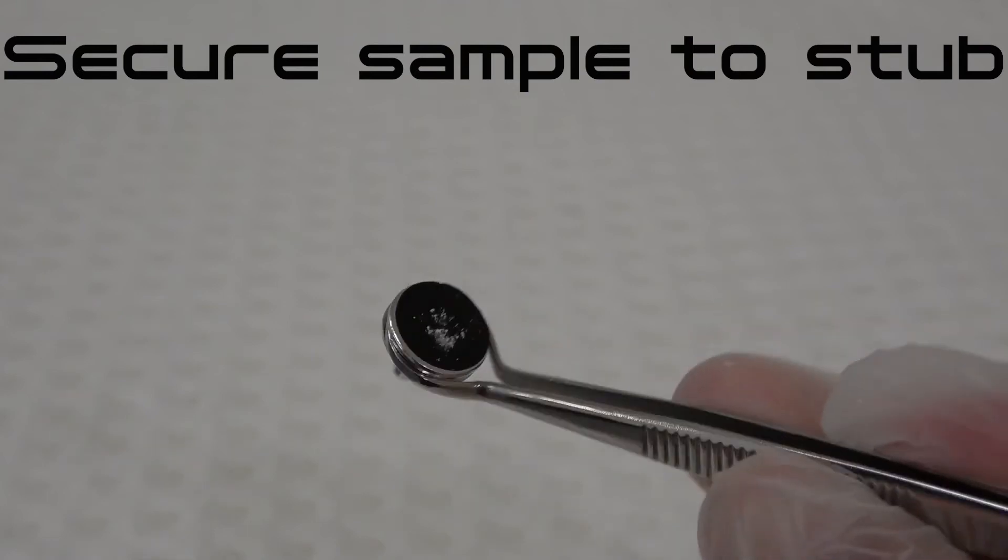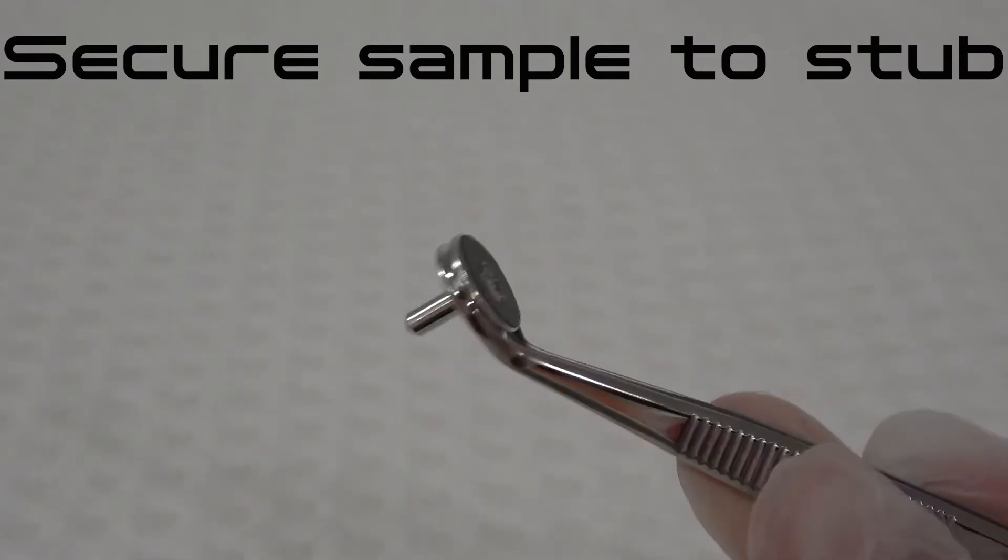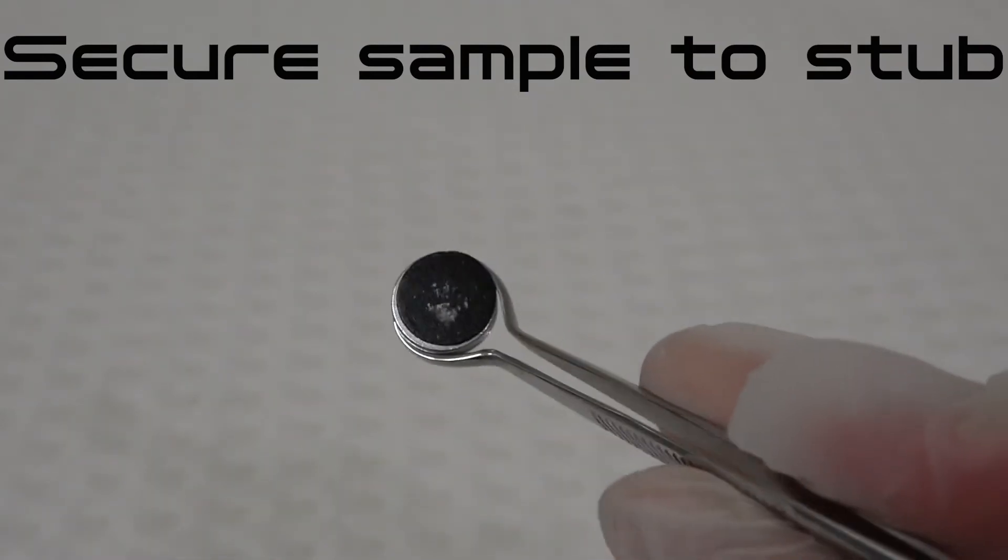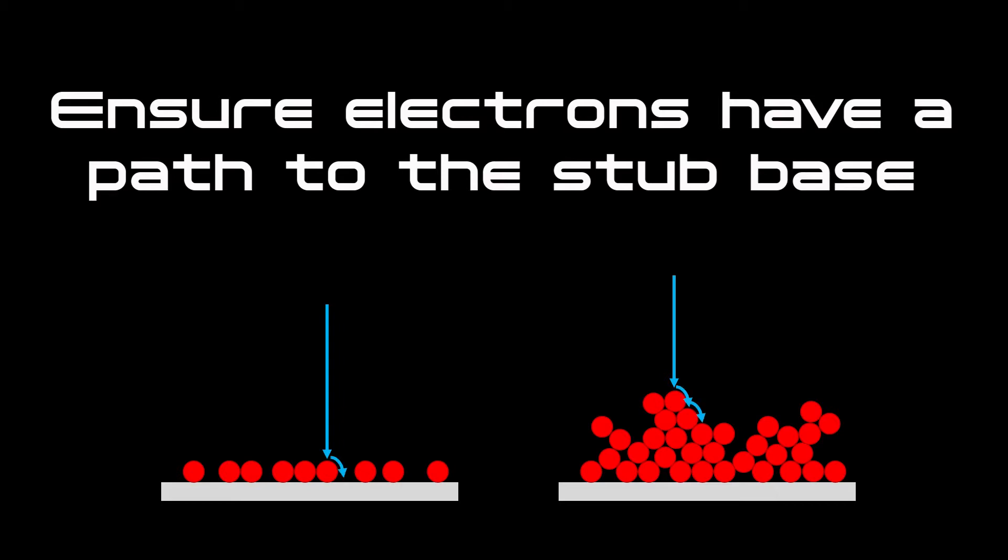When mounting powdered samples for SEM, our main goals are to secure the sample particles to the SEM stub so that they do not move during SEM examination, and to ensure the negative charge generated by the electron beam has a pathway away from the surface of the particles to the conductive adhesive and stub base.